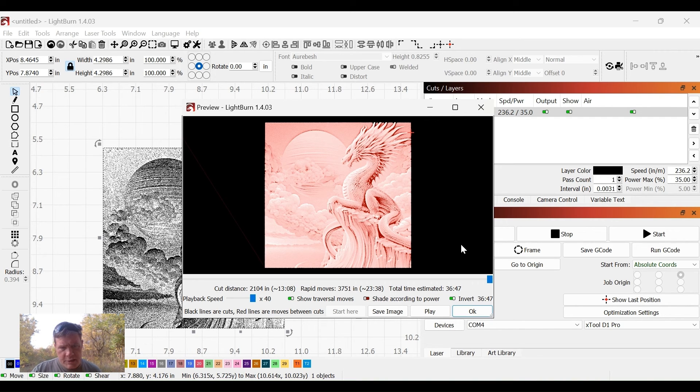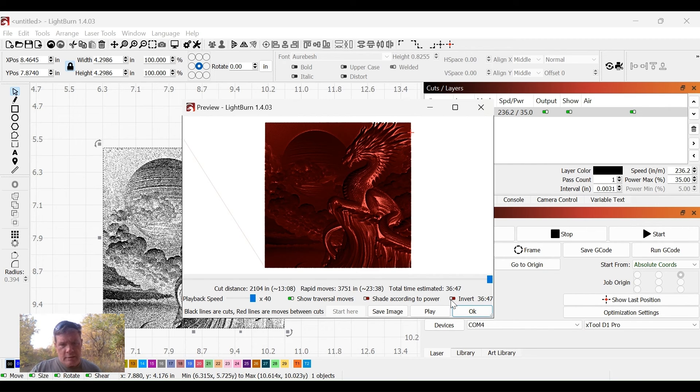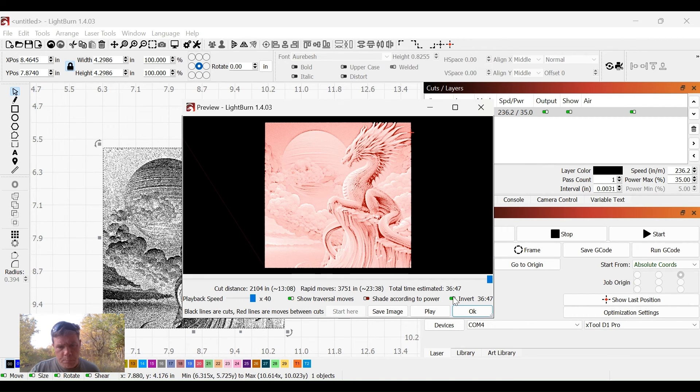That's because it is going to invert when I engrave. If we turn that off, that's what you're going to see. That is what we would get if it was not inverted, but we already did that. I'm liking the way that looks.